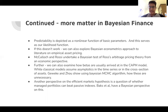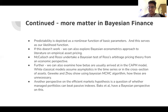McCulloch and Rossi undertake a Bayesian test of Ross's arbitrage pricing theory from an economic perspective. There are also examinations of how betas are arrived at using the CAPM model. While classical models assume asymptotics in the time series, other authors show that the MCMC algorithm can be used, making the other time series and cross-section assumptions unnecessary. Box et al. have also studied the efficient markets hypothesis — whether managed portfolios can beat passive indices — using a Bayesian perspective.